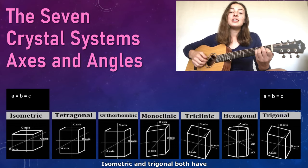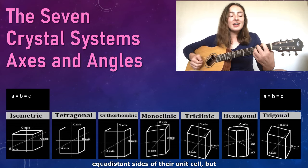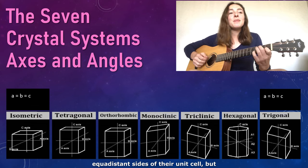Isometric and trigonal both have equidistant sides of their unit cell.